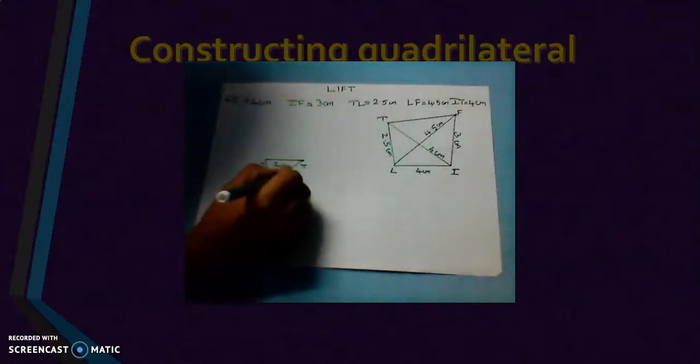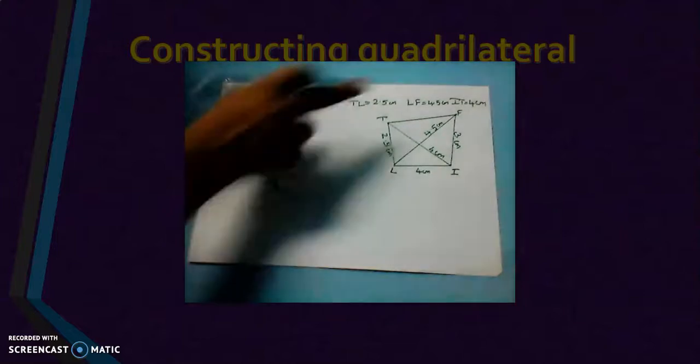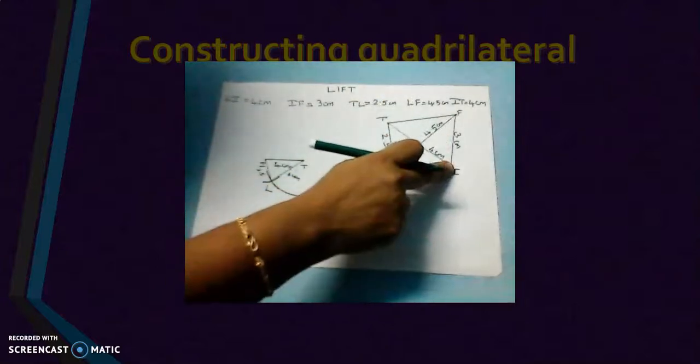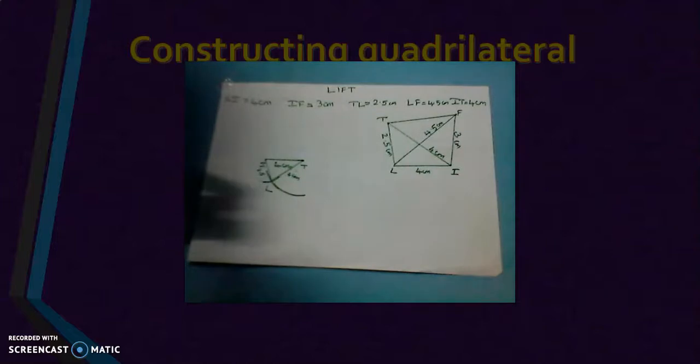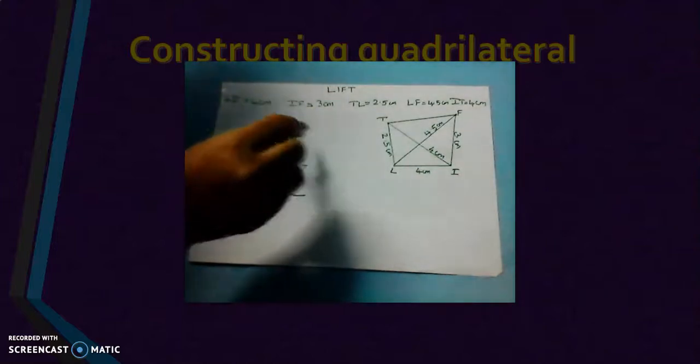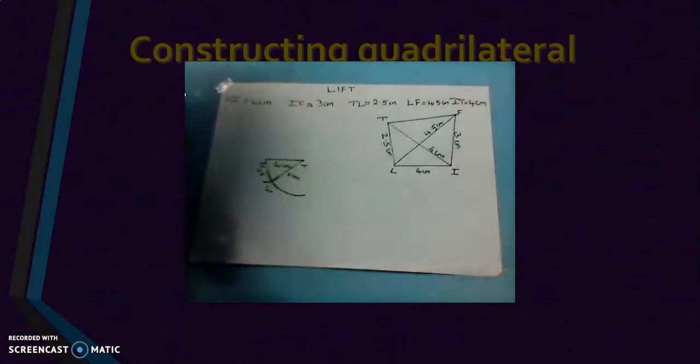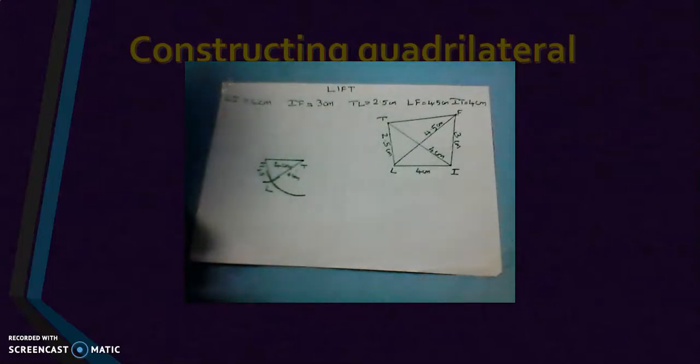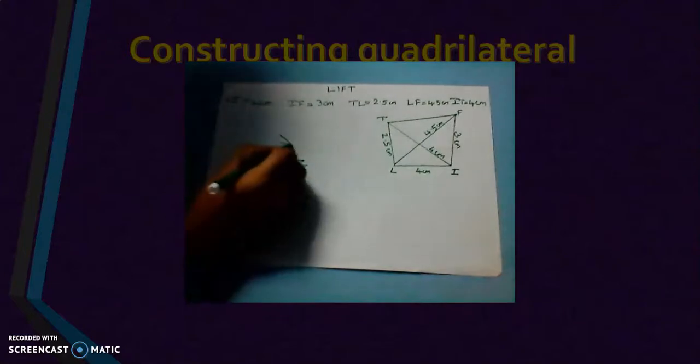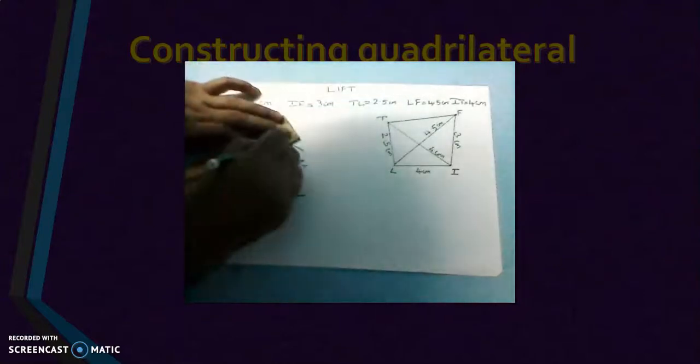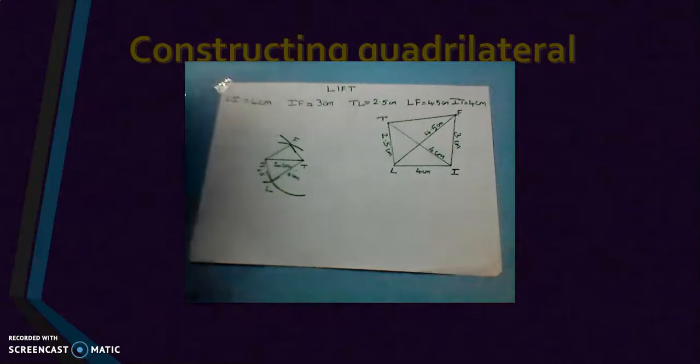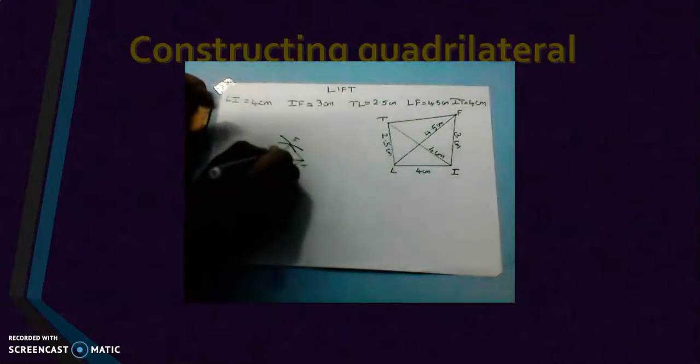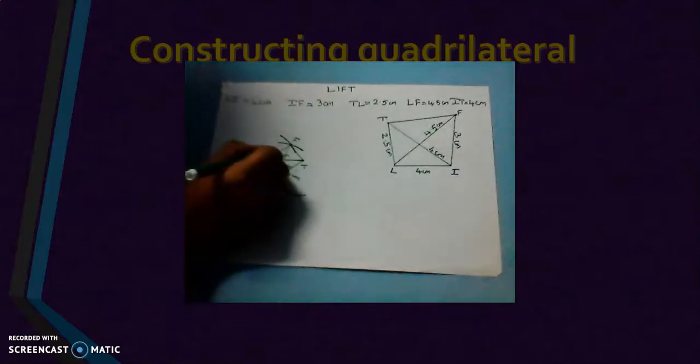Now I have to locate the point F. This F is 3 centimeter away from I and 4.5 centimeter away from L. So let us make it fast. 3 centimeter from I. Then from L it is 4.5 centimeter. These two arcs cut here at the point F. Now I will join these two. We have completed this diagram. Don't forget to mark LF measurement also in the fair diagram. What is LF? 4.5 centimeter. What is IF? 3 centimeter. Is it clear?